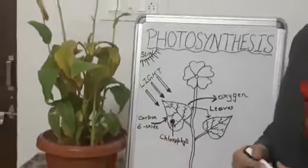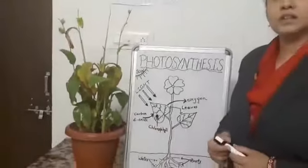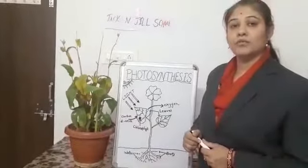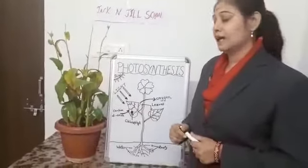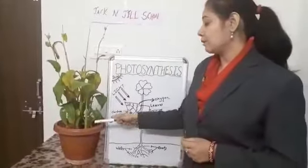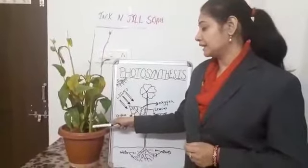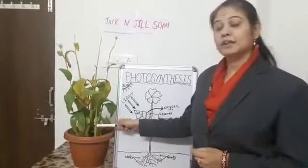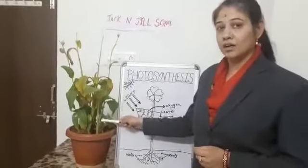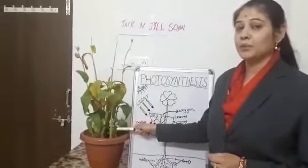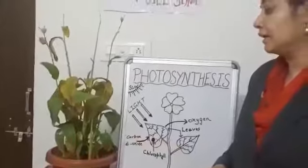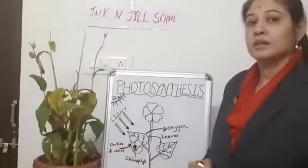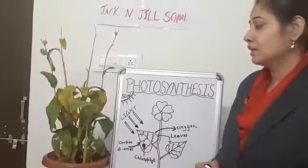The main function of roots is to absorb water and minerals. The second part of the plant is the stem. It grows upward, it supports the plant and transports water to the leaf.